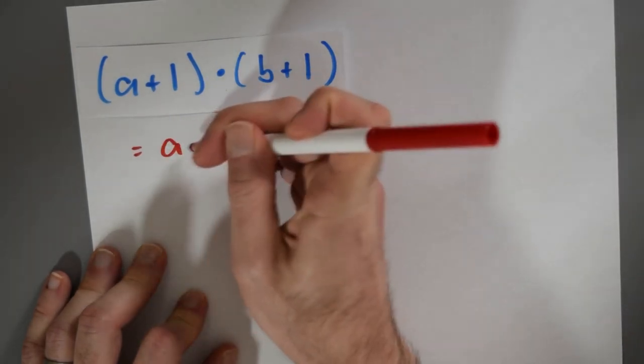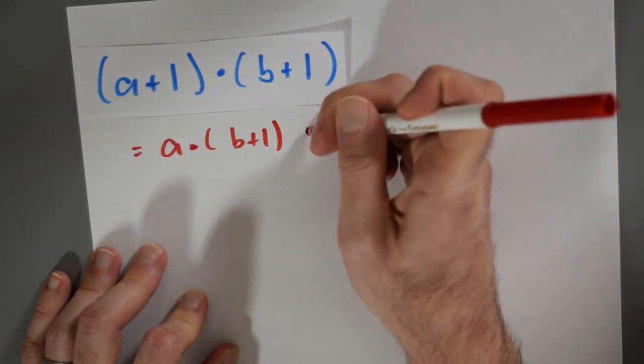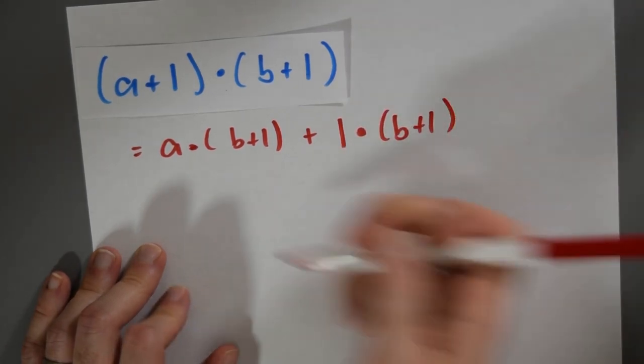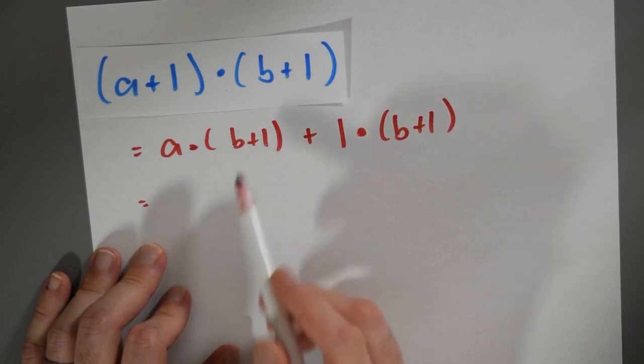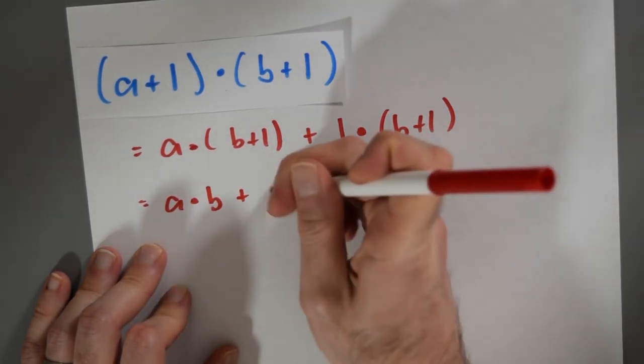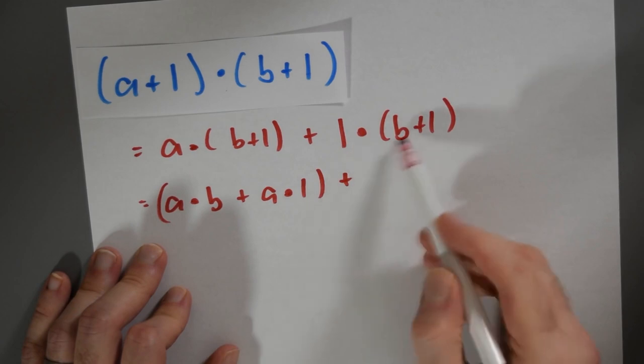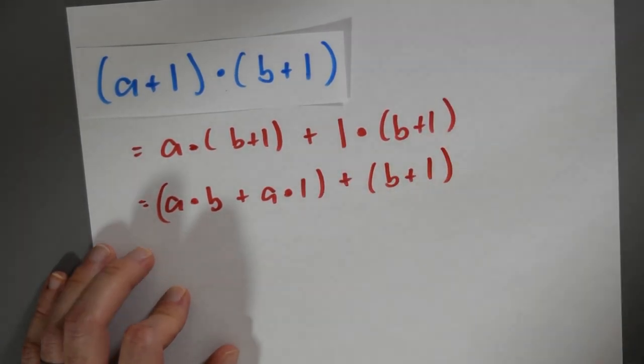So in that case, I get a·(b+1) + 1·(b+1). And I've got another chance to use distributivity here. This multiplication distributes over this addition, so I get a·b + a·1. And here I've got the multiplicative identity, so this is just +b + 1.